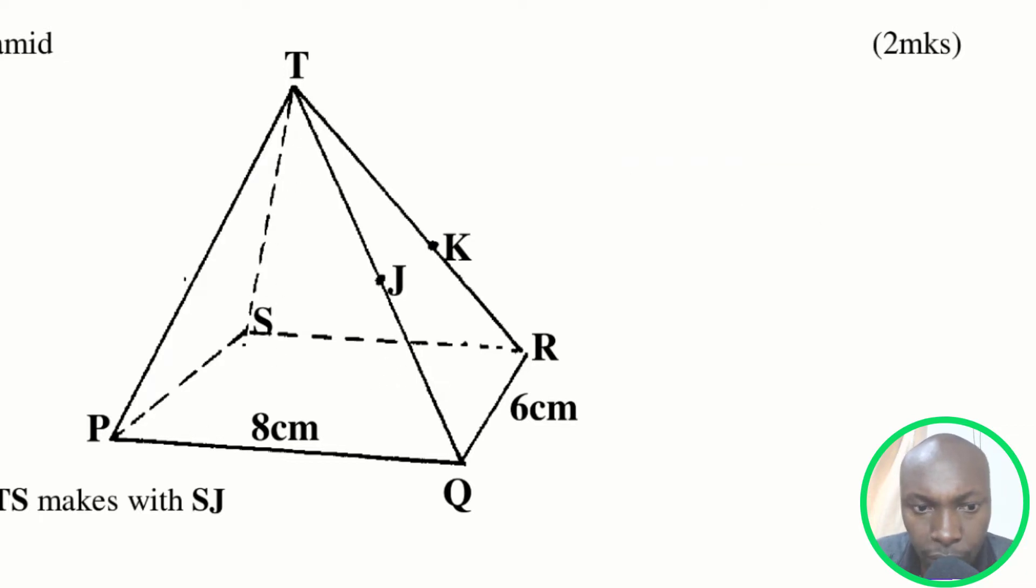Now to do that, there is a line that you're going to draw passing through from T going all the way to the center of that plane PTS, and then passing through the other plane exactly at the center of that plane like that. So the required angle between those two planes...